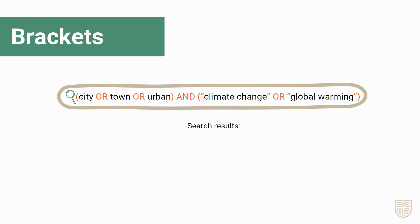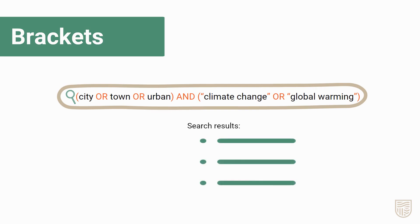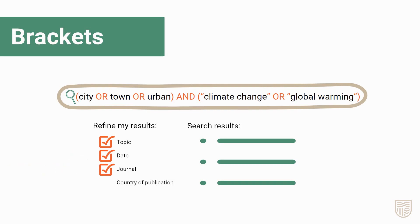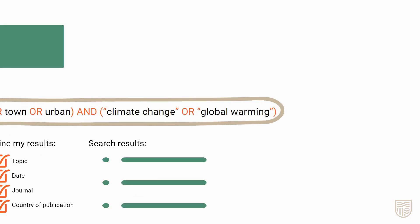After doing your search, there will be a list of search results and some options down one side of the page to limit or refine further. These allow you to narrow your results by categories like topic, date, journal, country of publication, and more.